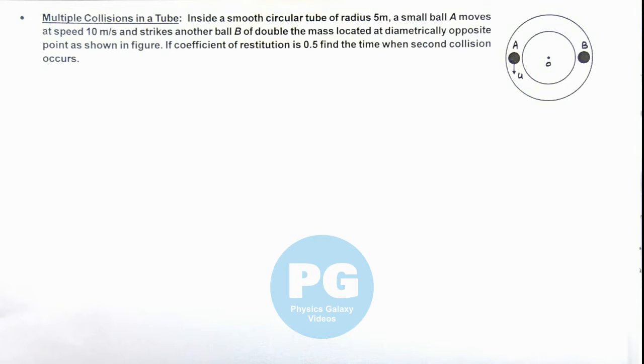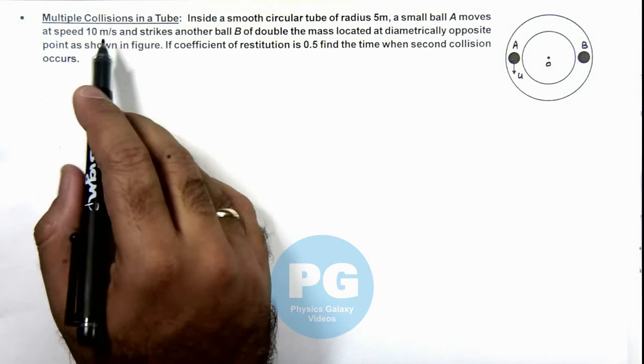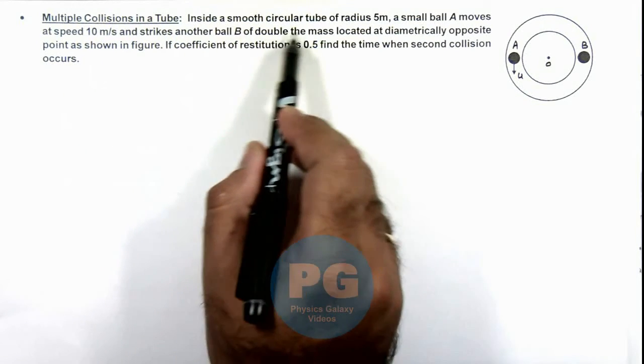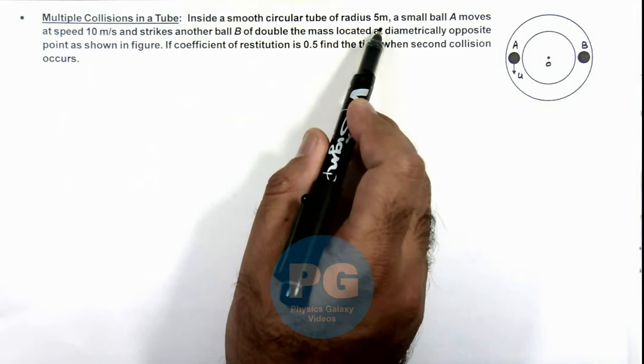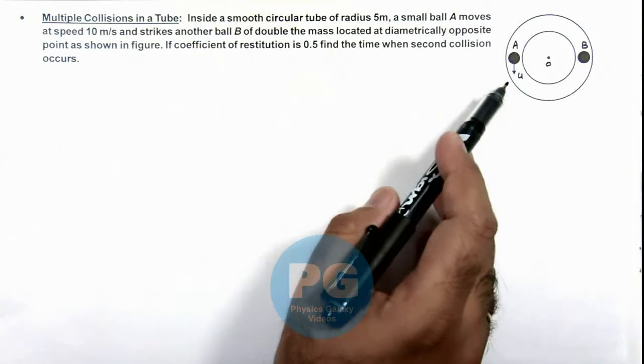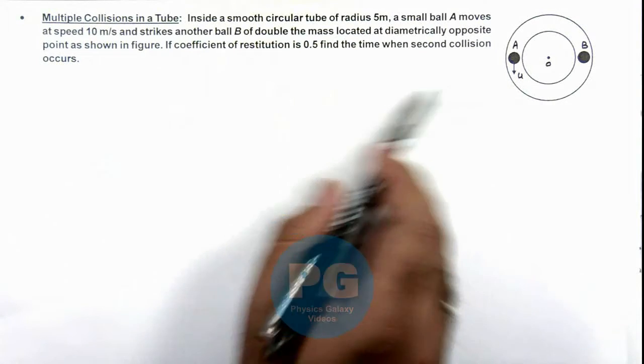In this illustration we'll discuss multiple collisions in a tube. Inside a smooth circular tube of radius 5 meters, a small ball A moves at a speed of 10 meters per second, as we can see in the figure.